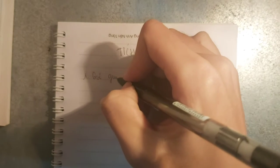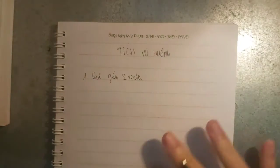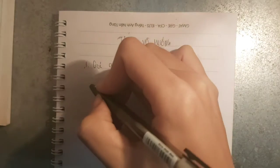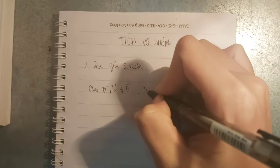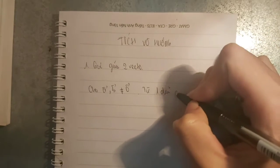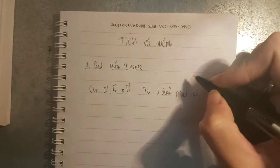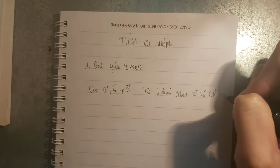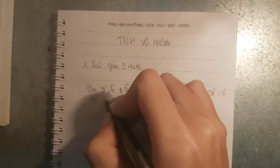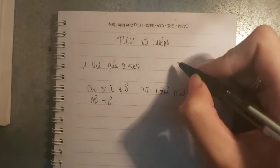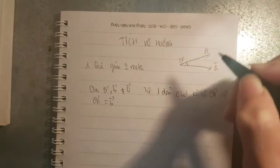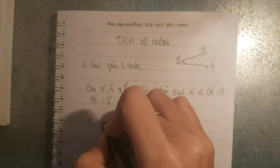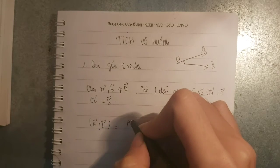Đầu tiên chúng ta sẽ tìm về góc giữa hai vector. Ví dụ như là cho hai vector A và vector B, đây đều là những vector khác vector 0. Thì từ một điểm O bất kỳ, chúng ta sẽ vẽ vector OA bằng với vector A và vector OB bằng với vector B. Ví dụ như thế này, đây là vector OA, đây là vector OB, đây là điểm B. Thì cái góc tạo bởi vector A và vector B sẽ là góc AOB. Chính là góc này.